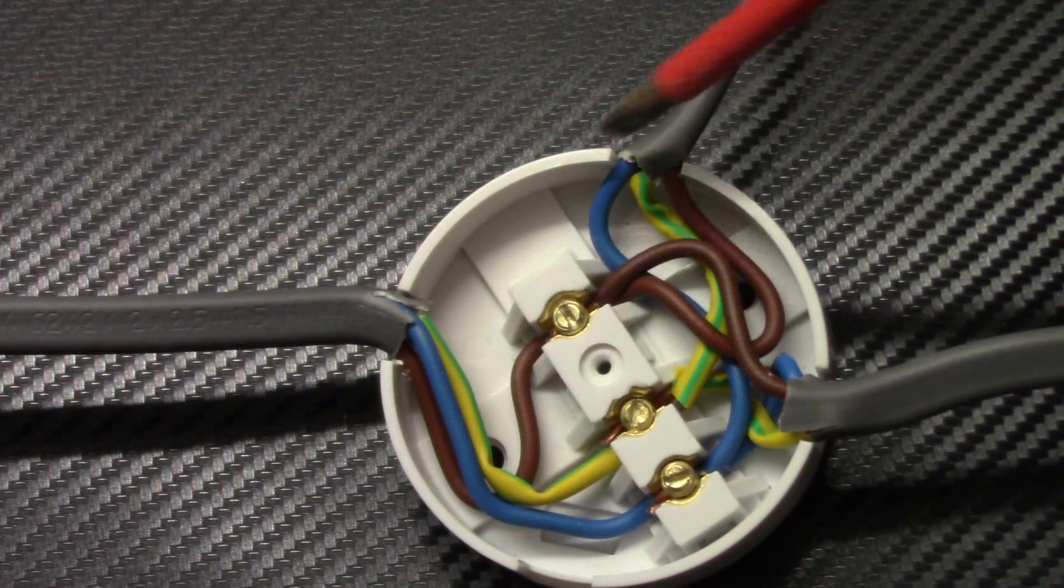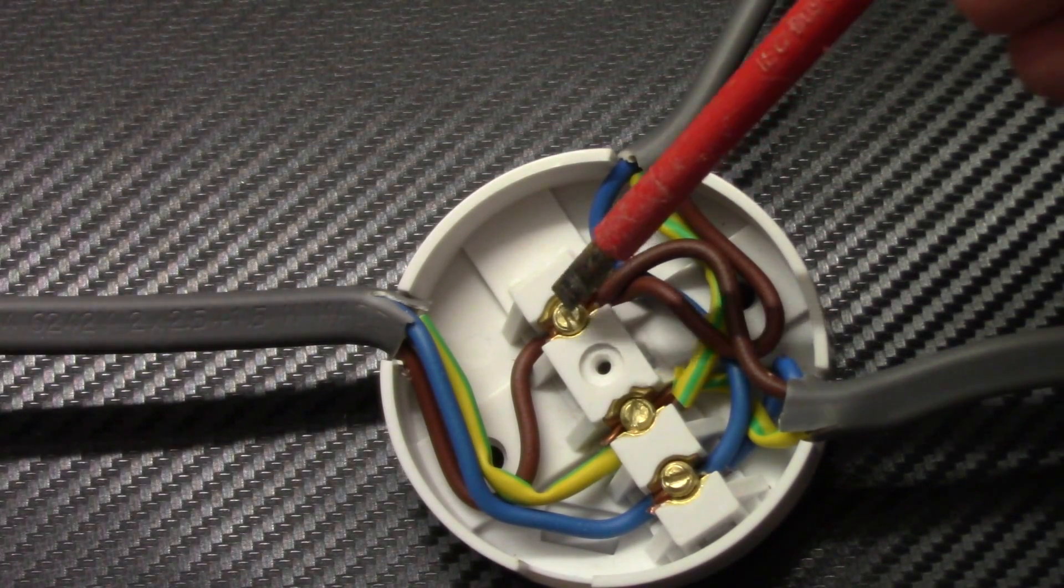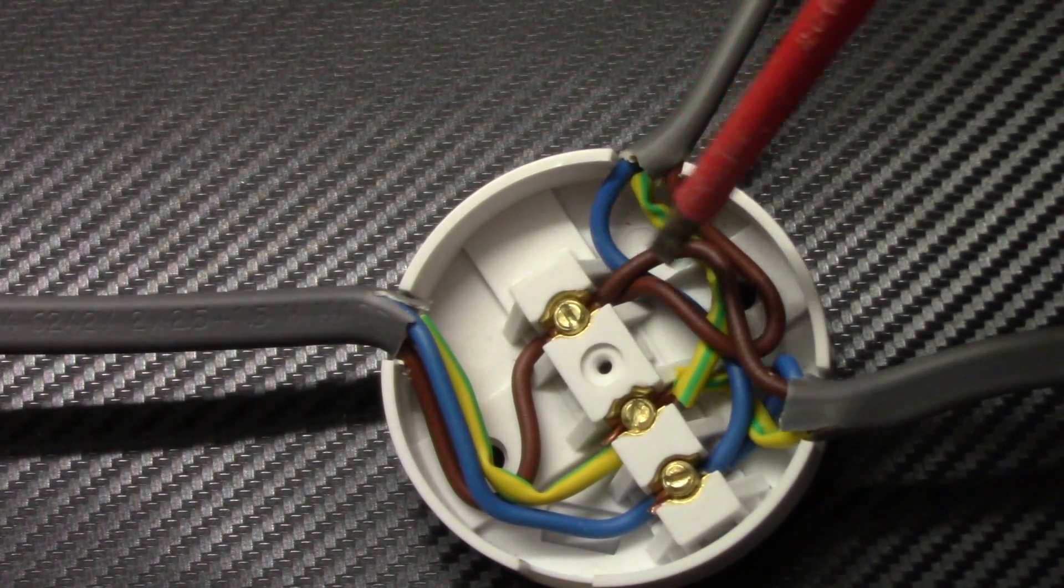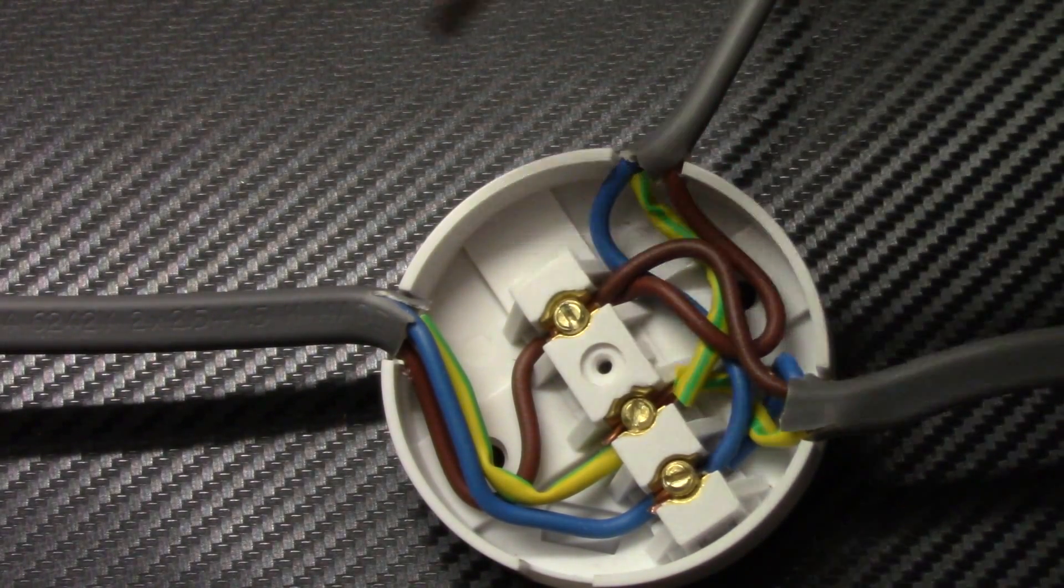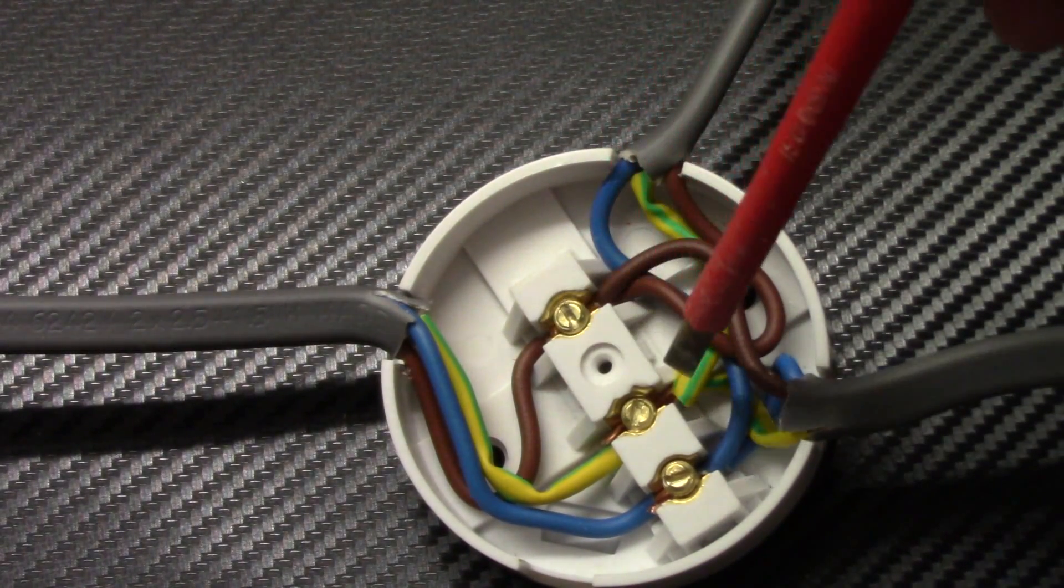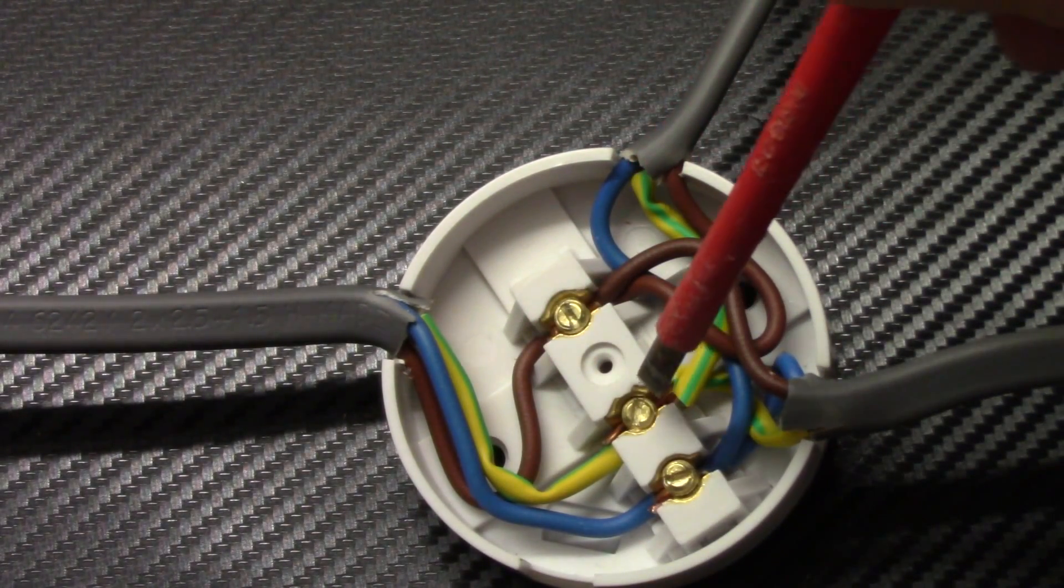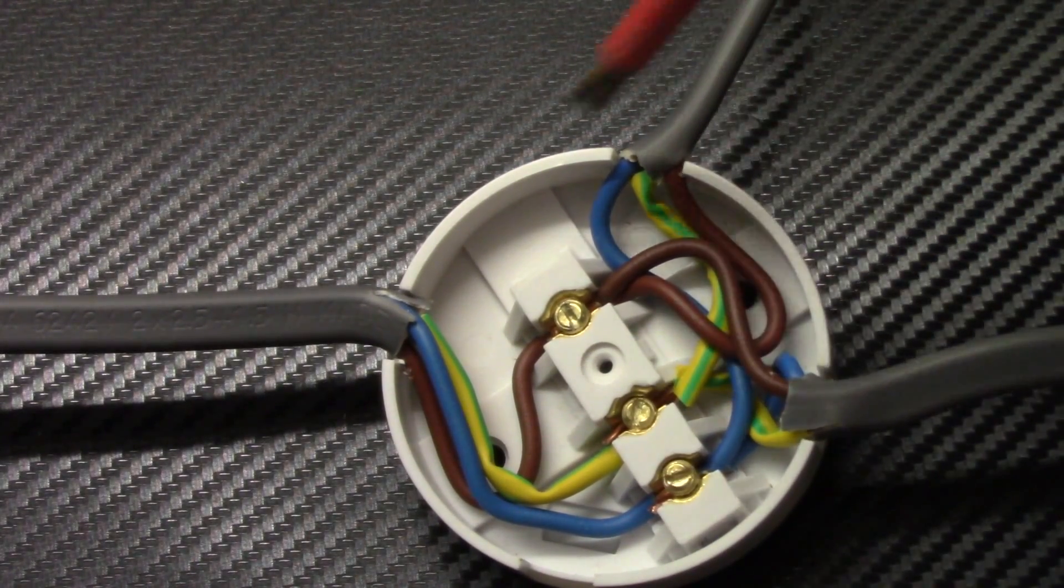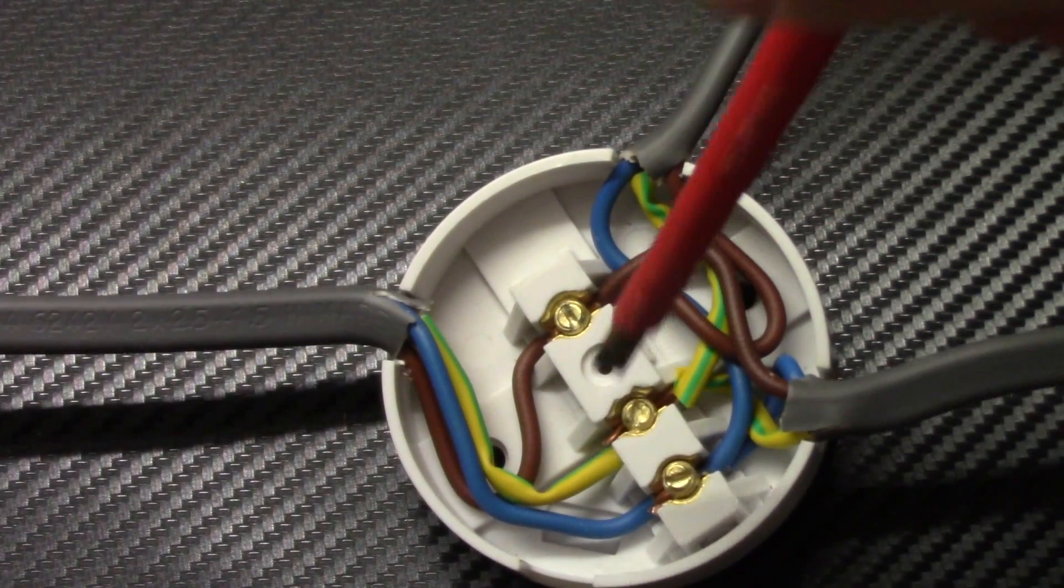This is 30A junction box. As you see, I've got three terminals. To one terminal I connected all three live brown cables from three sockets. In the middle I fit all three earthing wires from three sockets. And this is the neutral. I connected all three blue neutral wires into this one.